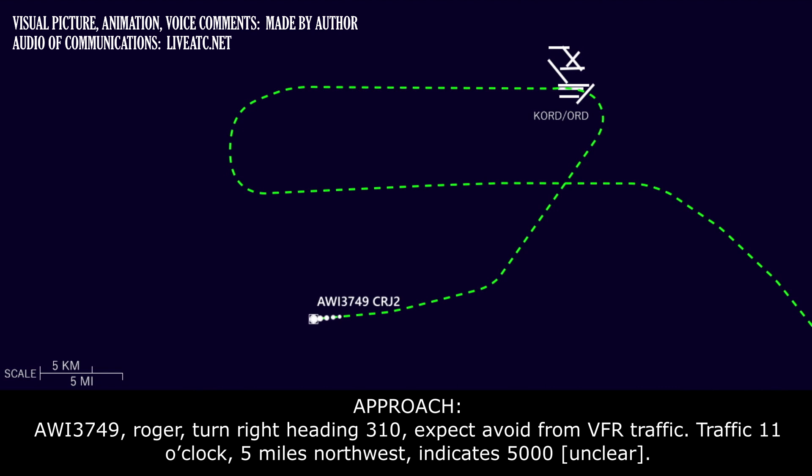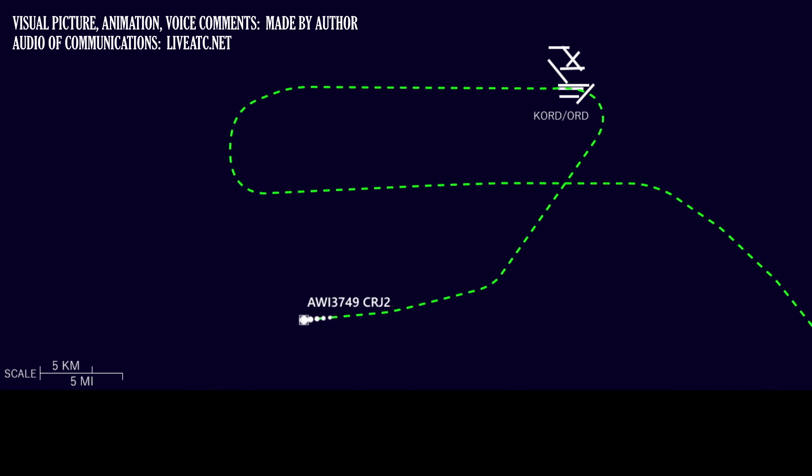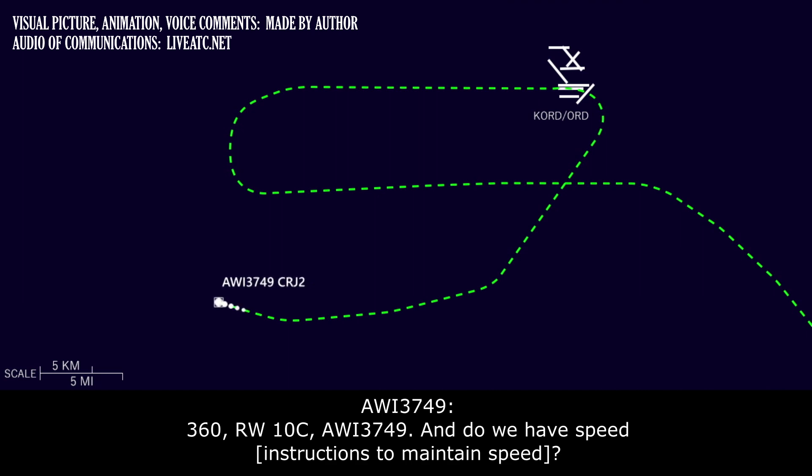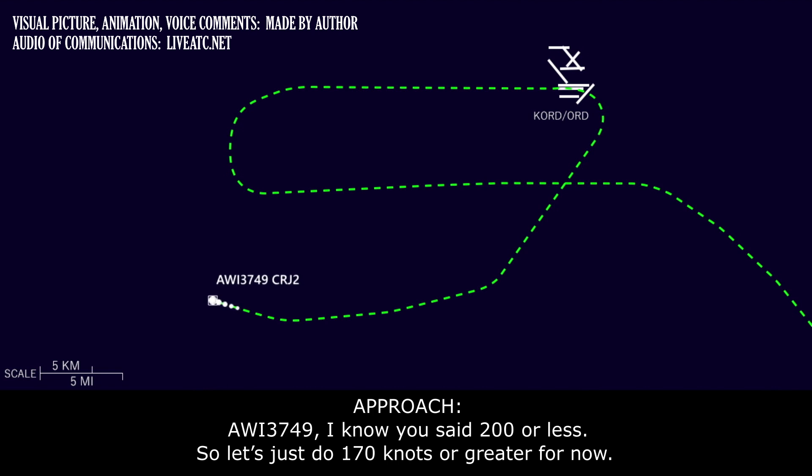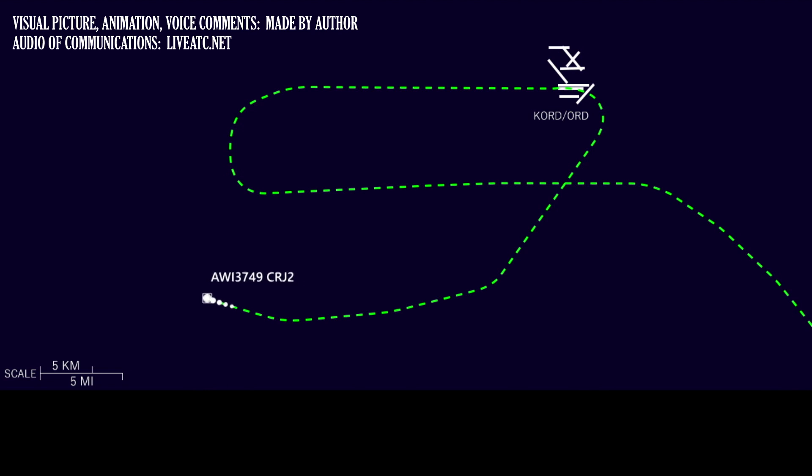Wisconsin 3749, roger, turn right heading 310, vector away from VFR traffic. Traffic 11 o'clock, 5 miles northwest bound, indicates 5000. And again, this will be vectors for runway 10 center. I know you said 200 knots or less, so let's just do 170 knots or greater for now. 170 knots or greater, Wisconsin 3749.